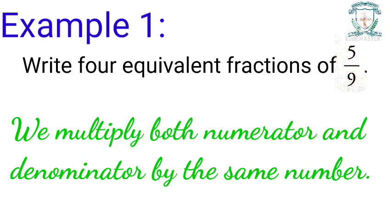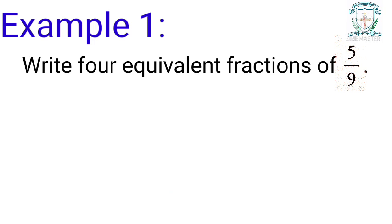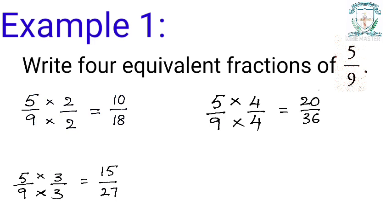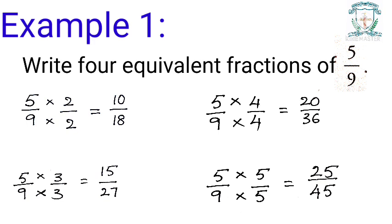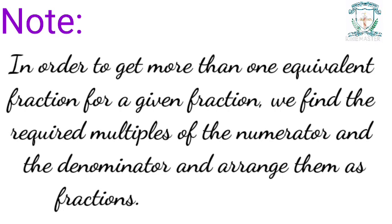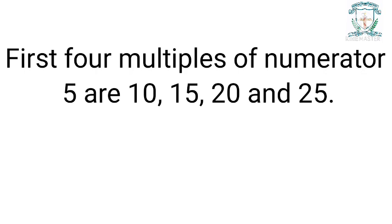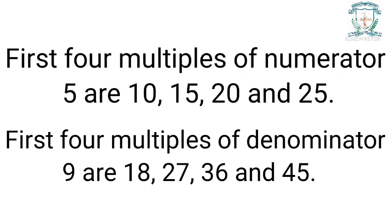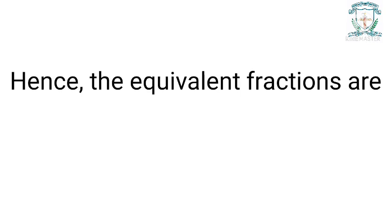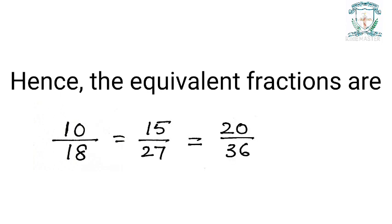We get 10 by 18, 15 by 27, 20 by 36, and 25 by 45. Note: in order to get more than one equivalent fraction for a given fraction, we find the required multiples of the numerator and denominator and arrange them as fractions. The first four multiples of numerator 5 are 10, 15, 20, 25. The first four multiples of 9 are 18, 27, 36, 45. Hence the equivalent fractions are 10 by 18 = 15 by 27 = 20 by 36 = 25 by 45.